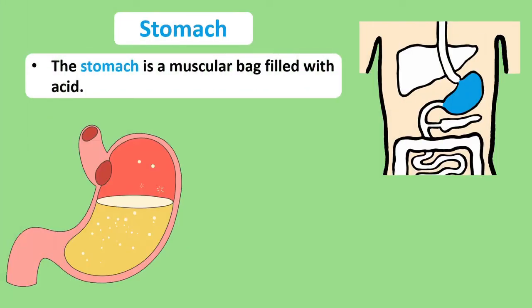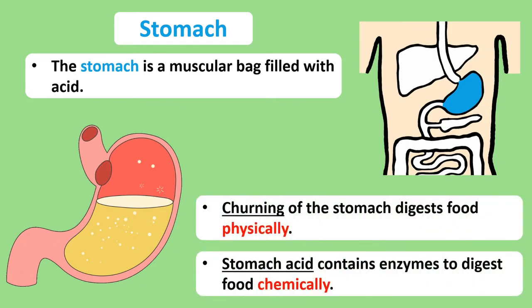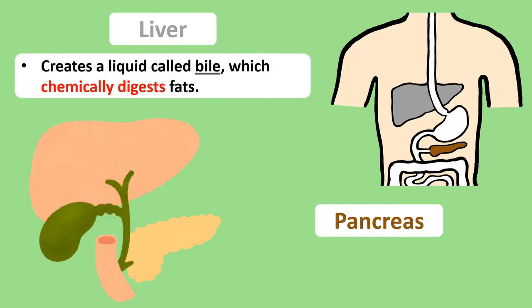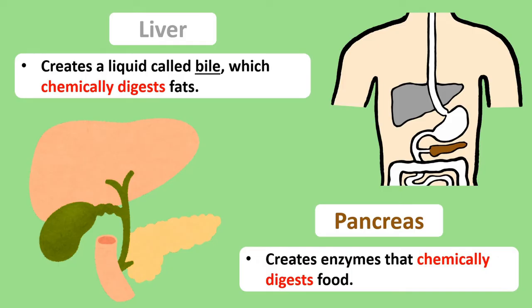The next stop for food is the stomach. It's a muscular bag filled with acid. Rumbling or churning of the stomach physically digests food, while enzymes in the stomach acid chemically digest food down into a consistency quite like soup. Food then moves out of the stomach, where bile from the liver and enzymes from the pancreas further chemically digest it. Bile is important because it breaks down any fat content in food.